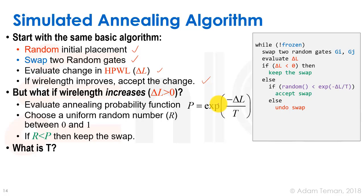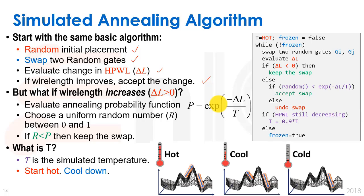The question is: what is T? As I said, T is this type of simulated temperature. It starts hot and it cools down. That means that there is a much higher probability at the beginning of our algorithm that R will be smaller than P, because P will be larger.